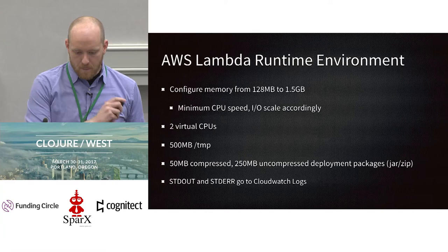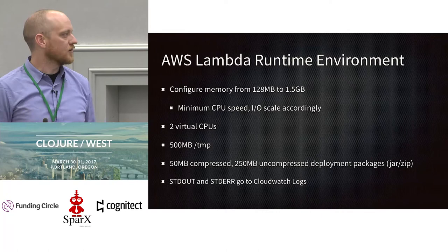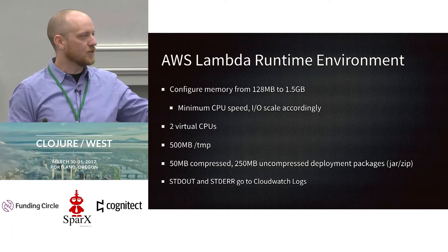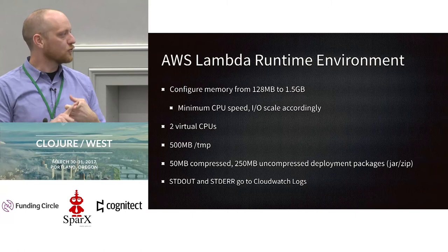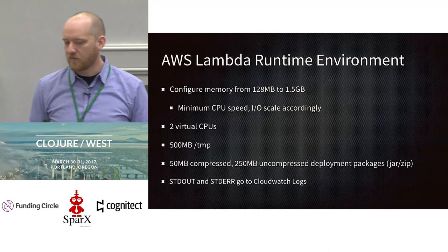The Lambda runtime environment is irrespective of the language runtime you choose. Right now you get between 128 megabytes and 1.5 gigabytes of memory; the minimum CPU speed and IO scale accordingly to that. You get two virtual CPUs, 500 megabytes of temp space, and there are some limitations on the size of the code artifact you can upload. Standard out and standard error go to CloudWatch logs.